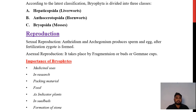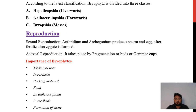Reproduction in Bryophytes includes both sexual and asexual reproduction. In sexual reproduction, the antheridium is the male sex organ and the archegonium is the female sex organ. They produce sperm and egg respectively. After fertilization, a zygote is formed.